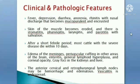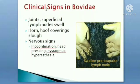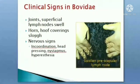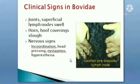Further clinical and pathological features include swelling of hoof corium, superficial lymph node swelling, horn and hoof loosening. Nervous signs include incoordination, head pressing, nystagmus, and hyperesthesia.